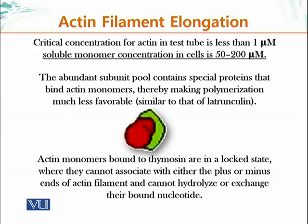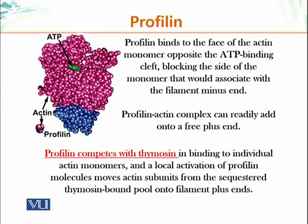So how do cells recruit actin monomers from this sequestered pool and use them for polymerization? Of course there will be events when you need to make actin filaments, and if all monomers have been sequestered by thymosin, how do you elongate actin filaments? Let me introduce you to another protein called profilin. Profilin binds to the face of the actin monomer opposite the ATP binding site cleft.